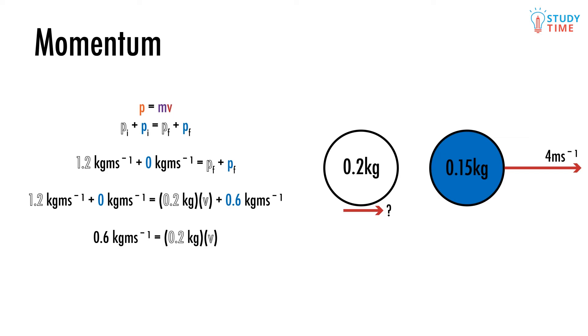So 0.6 now equals 0.2v. Then we divide both sides by 0.2 so that v equals 3. Therefore we can say that the final velocity of the white ball will be 3 meters per second, and because it's a positive velocity, we can say it'll be moving to the right in the positive direction.